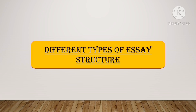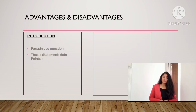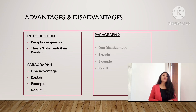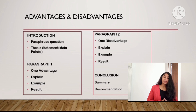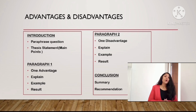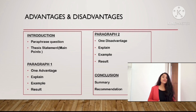Now we are going to discuss the different types of essay structures. The first is the advantages and disadvantages essay. You have to start with the introduction paragraph in which you first paraphrase the question. You must be aware of the concept of paraphrasing — you paraphrase the question, as simple as that. Next, you write a thesis statement, which is just outlining the main ideas you are going to include in your essay. The introduction should be within 50 words.